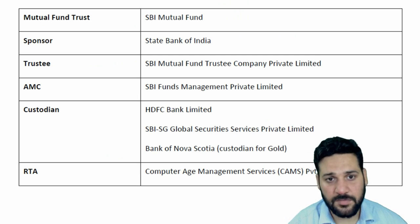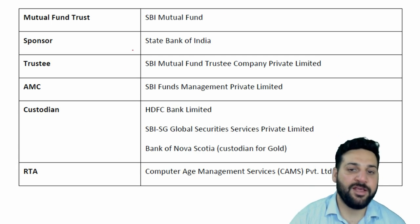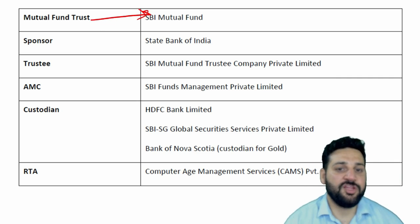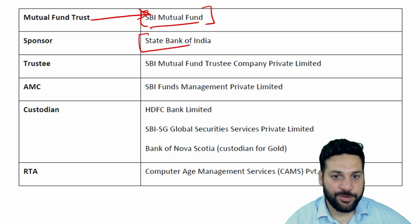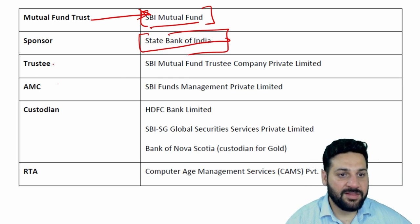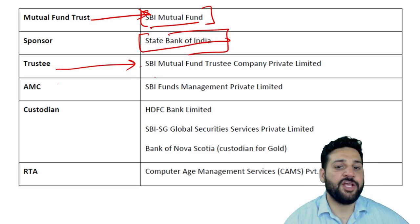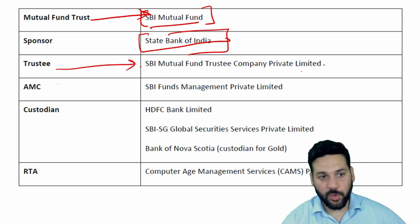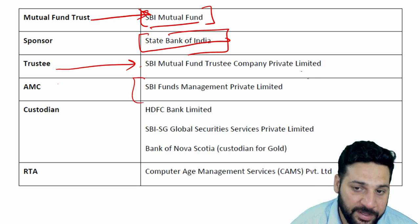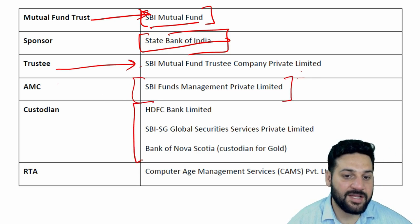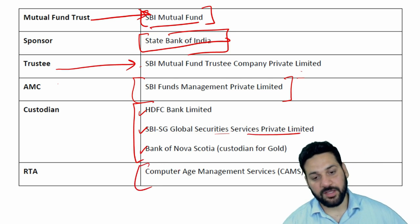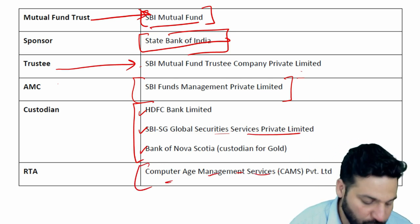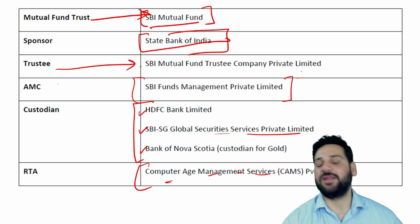Let me give an example of SBI Mutual Fund. The name of the trust is SBI Mutual Fund. The sponsor was State Bank of India. The trustee is SBI Mutual Fund Trustee Company Private Limited. The AMC is SBI Funds Management Private Limited. The custodians are HDFC Bank Limited, SBI SG Global Securities Private Limited, and Bank of Nova Scotia. The RTA is CAMS — Computer Age Management Services Private Limited. That's all for today, thank you and have a very nice day!